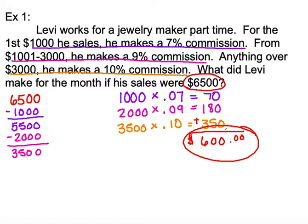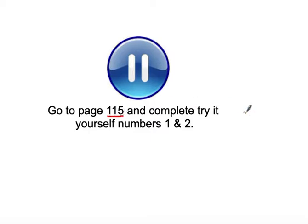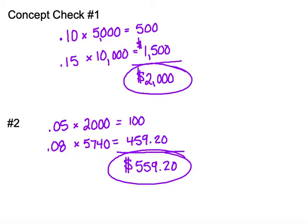Now I'm going to ask you to look in your book on page 115 and try numbers one and two. Go ahead and pause the video until you've completed those problems. When you're finished, press play and I'm going to show you the solutions. The answer to concept check one is $2,000. Check your work — if you're not sure where your mistakes are, I've worked out these problems for you. The answer to concept check number two is $559.20.